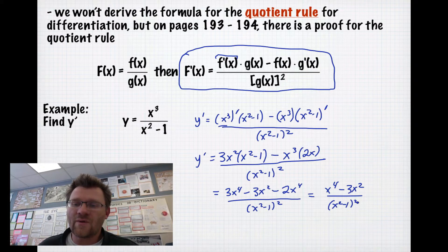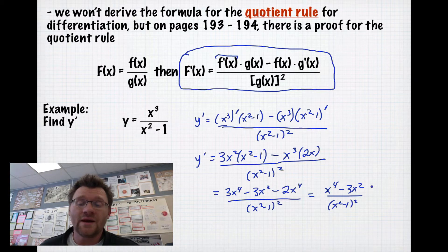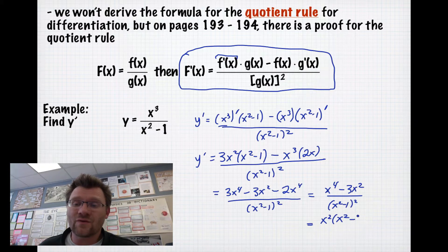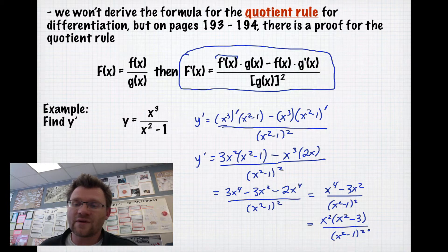A habit you want to get into is to take out a greatest common factor whenever you can when you're done, and see if what you have left will cancel out with the top and bottom — this happens with rational functions. I'm going to take out x squared, leaving x squared minus 3, which doesn't cancel out with the bottom. But if it did, we'd be set up to cancel out some of those factors.